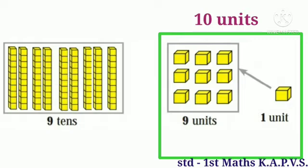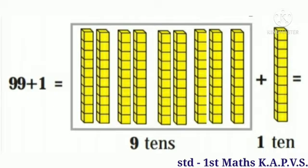There is no digit bigger than 9. When there are 10 units in the units place, make a bundle of them and place it in the tens place on the left. 9 units plus 1 unit is equal to 10 units.